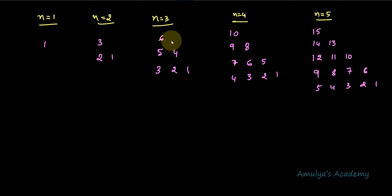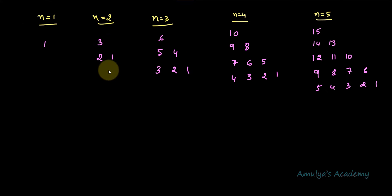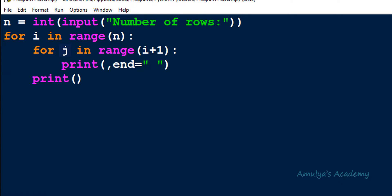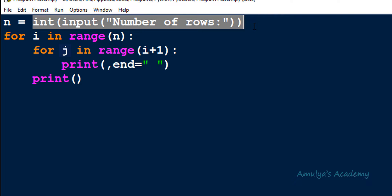When n — that is the number of rows — is 3, we start from 6: 5 4 3 2 1. When n is 2: 3 2 1. When n is 1: just 1. Today we want to write a Python program to print this pattern. In this channel we already discussed many pattern programs using nested for loops, and here also we'll use nested for loops.